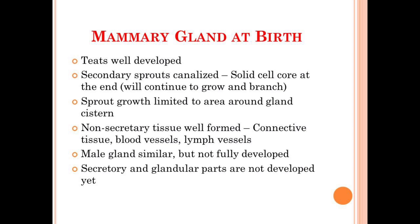Moving further, we will discuss the growth of the mammary gland at the time of birth. At birth, the teats are well developed and the secondary sprout will start to canalize, continuing its growth and leading to the formation of a well-developed duct system. The growth of the secondary sprout will be limited to the area around the gland cistern — the cavity that stores milk between two milking periods. At the time of birth, non-secretory tissues also form, like connective tissue, blood vessels, and lymph vessels. However, the secretory and glandular parts of the udder are not yet developed.